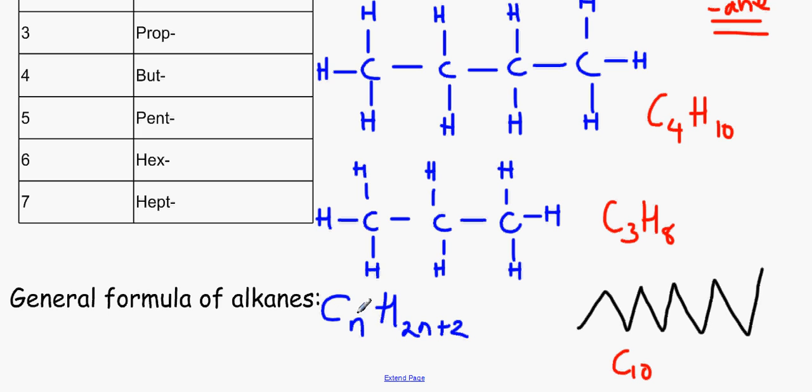For whatever number we get for carbon, we have to multiply it by 2 and add 2 to get hydrogen. So let's put this into practice. We've got 10 carbon atoms, so we replace n with 10. So it will be 10 carbon atoms. The amount of hydrogen atoms will be 10 times 2, which is 20, plus 2, which is 22.